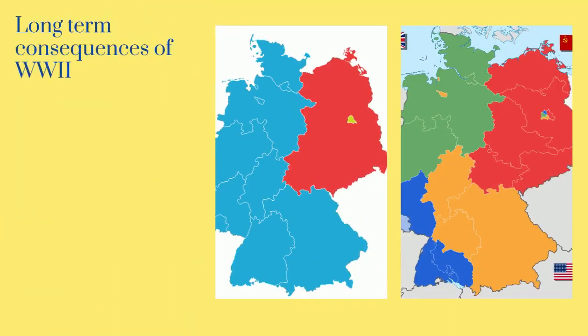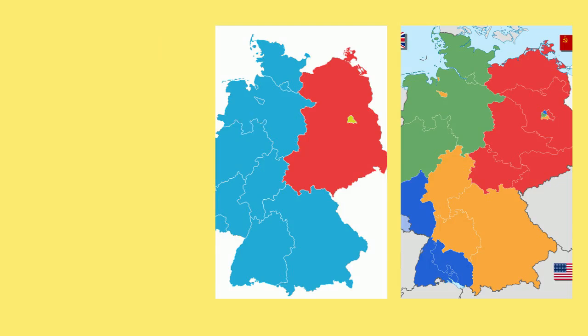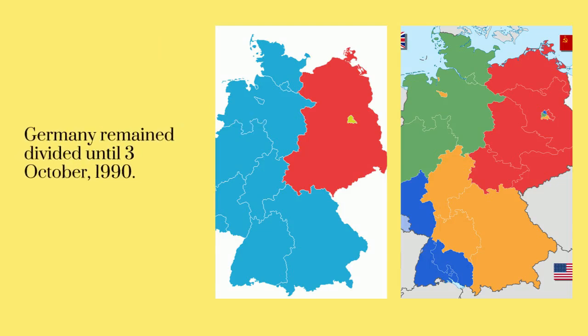World War II also had a series of long-term consequences. The first of these was the Division of Germany. After World War II, Germany was initially split into four occupied sectors, before being split into the GDR and the DDR, so East and West Germany. Germany remained divided like this until the 3rd of October 1990.